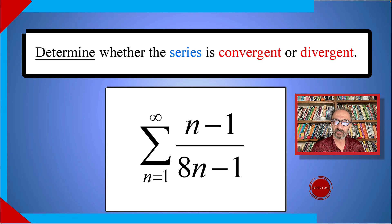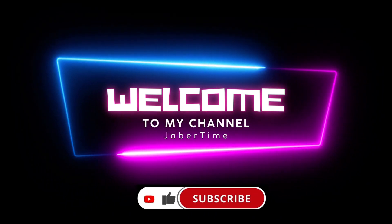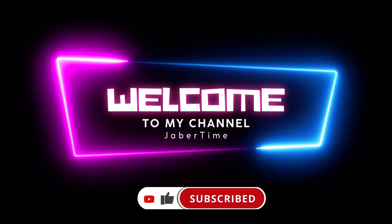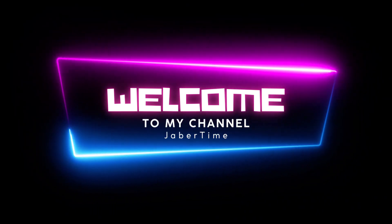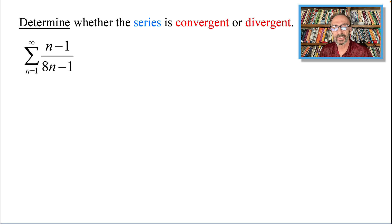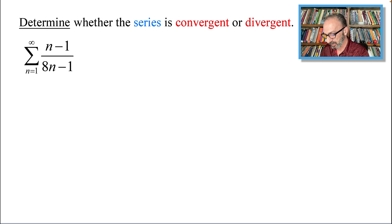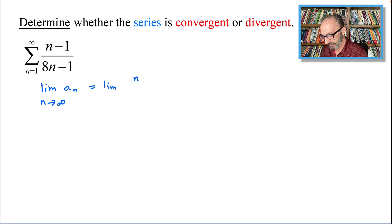Determine whether the series is convergent or divergent. Let's find out the limit of a sub n as n approaches infinity — this right here is our a sub n. So now what we have is the following: the limit of a sub n as n approaches infinity is equal to the limit of n minus 1 over...